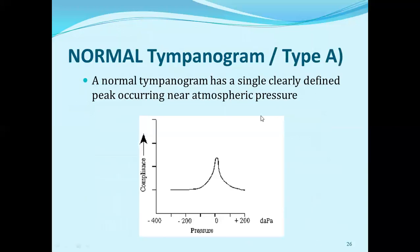This is a tympanogram, showing compliance on one axis and pressure on the other. The tympanogram peak determines whether your result is normal or not. The pressure is given up to 200 daPa in the ear canal. The peak of the graph indicates a normal tympanogram. We call this Type A.